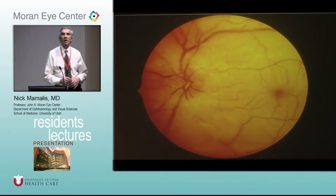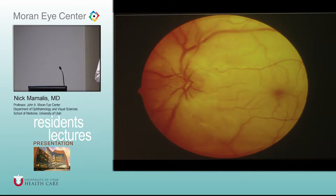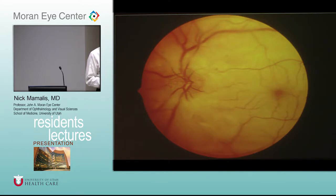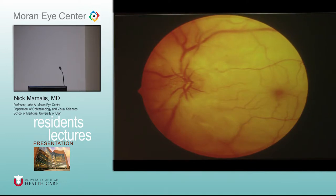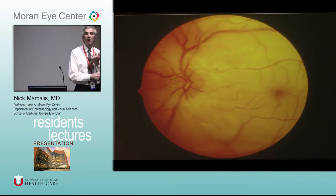What are we seeing right here? A very pale fundus — cherry red spot — probably central retinal artery occlusion. This is an ischemic retina starved for oxygen: very white, pale, swollen. The cherry red spot is where you can see the choroidal vasculature because the fovea is so thin — it's like a window defect. The fovea gets its blood supply from the choroid; the choroidal blood supply is still good, so you see that foveal blood supply shining through. That's the classic cherry red spot from a central retinal artery occlusion.